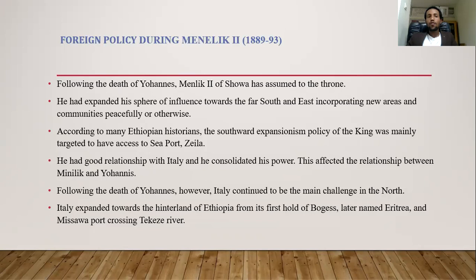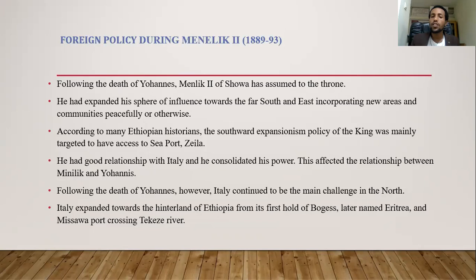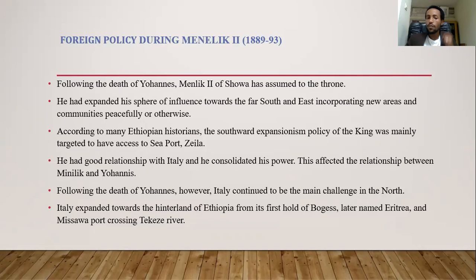The third is the foreign policy during Menelik II of Shoa, who assumed the throne after Johannes. He expanded his sphere of influence toward the south and east, incorporating new areas peacefully and through war, creating the present country. According to many European historians, the southward expansion policy was mainly targeted to gain access to seaports — in the east, the main idea was to conquer parts of Somalia and get a seaport at Zeila. He had a good relationship with Italy and consolidated his power using Italian support, which created tension with Johannes.